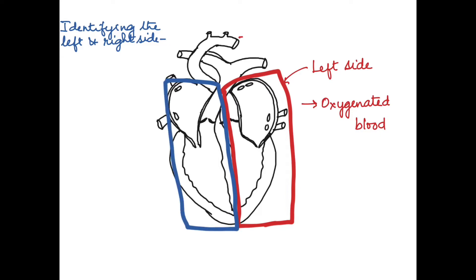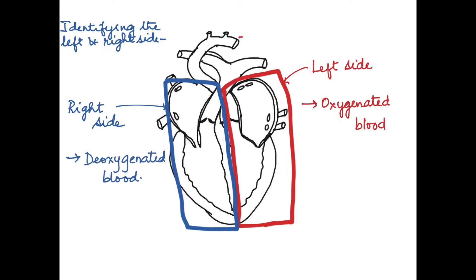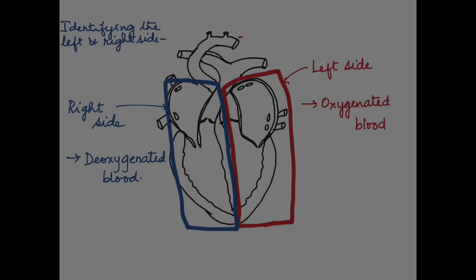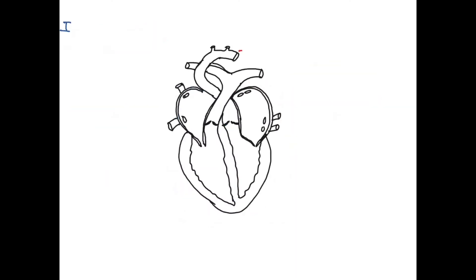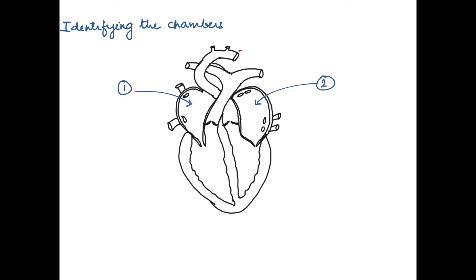The other side is the right side. The right side deals with deoxygenated blood — it receives deoxygenated blood and pumps it to the lungs for oxygenation. Now let us identify the chambers of the heart. The heart has four chambers: two upper chambers and two lower chambers.